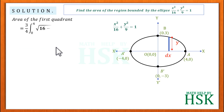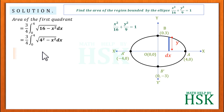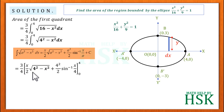The area of the first quadrant is obtained by integrating all the strips from x = 0 to x = 4. Applying the standard integration formula with a = 4, the integral becomes (3/4) times [x/2 · √(4² − x²) + 4²/2 · sin⁻¹(x/4)] evaluated from 0 to 4.